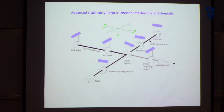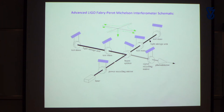Here is the instrument that actually did the detection, in schematic form. You'll recognize things I've talked about: the laser, the beam splitter, and the two far mirrors. The next thing done was putting another mirror in to make the light bounce back and forth many times — made into a Fabry-Perot cavity — with another one on the other arm, made as identical as possible so about equal time is spent on both sides.